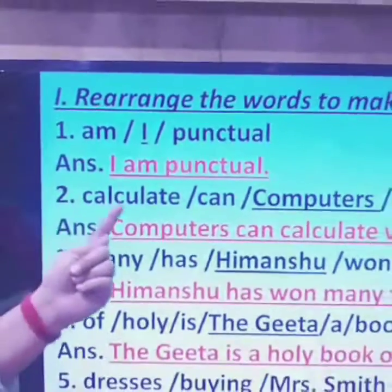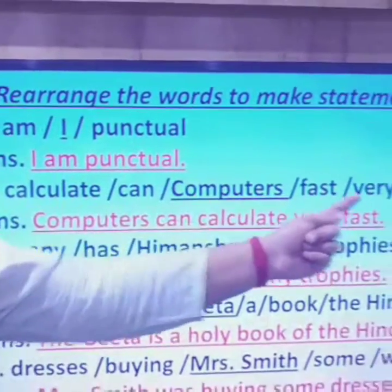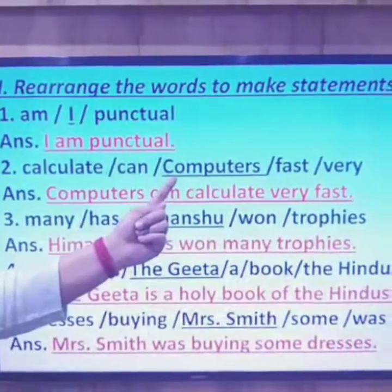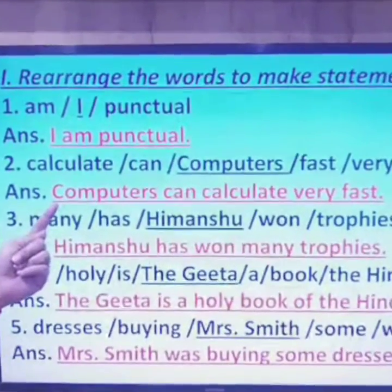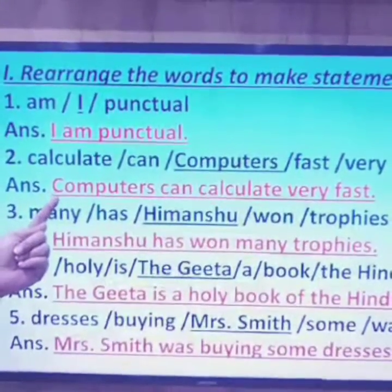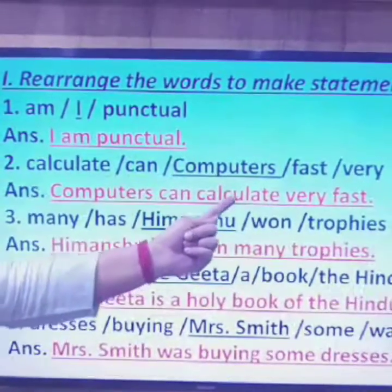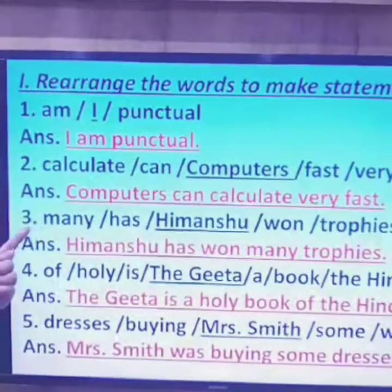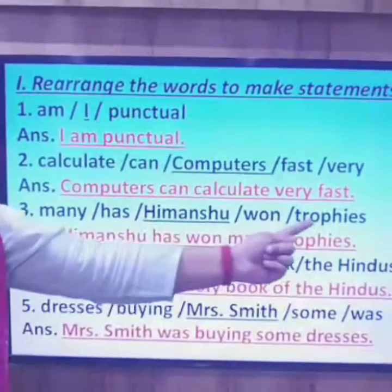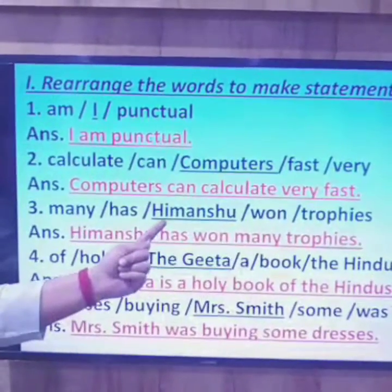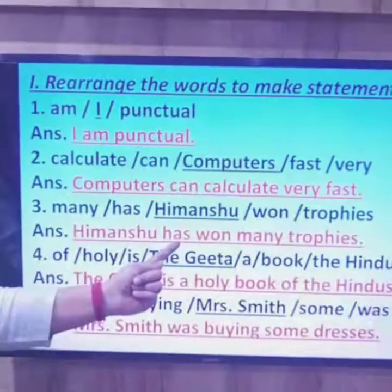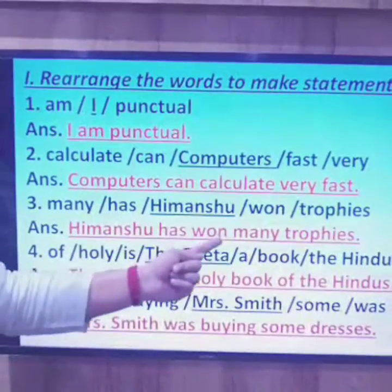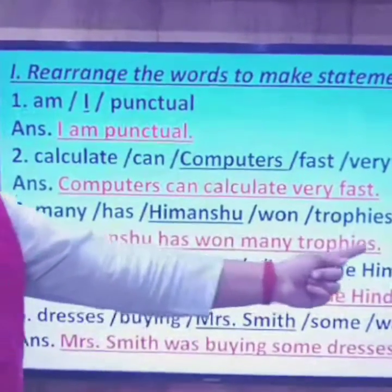Second example: 'calculate can computers fast very.' The subject is already underlined — 'computers.' We place it at the beginning with a capital letter, followed by helping verb 'can', then the predicate 'calculate very fast.' Next: 'many has Himanshu won trophies.' The subject is 'Himanshu', followed by helping verb 'has', then action word 'won'. The sentence becomes: 'Himanshu has won many trophies,' ending with a full stop.